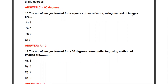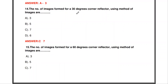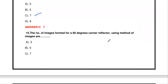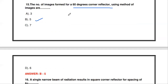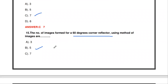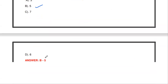The number of images formed for a square corner reflector using the method of images is three. The number of images formed for a 30-degree corner reflector is seven. The number of images formed for a 60-degree corner reflector using the method of images is five. Summary: at 90 degrees - 3 images; at 60 degrees - 5 images; at 30 degrees - 7 images.